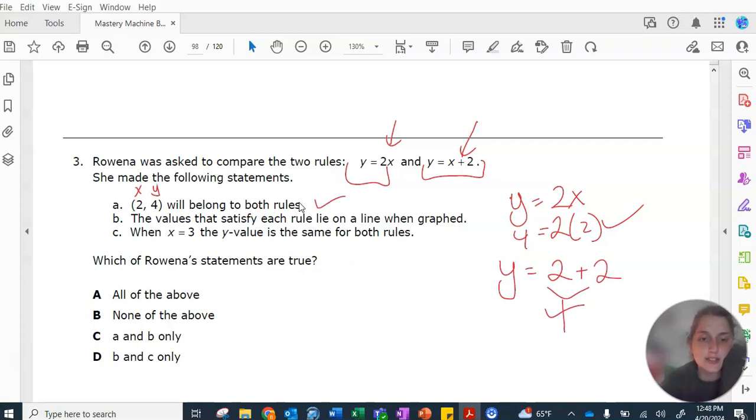The values that satisfy each rule lie on a line when graphed. If I were to graph the equation y equals 2x, it would look like that, and everything would be on a line. If I was to graph the equation y equals x plus 2, it would look like that, and every dot would be on a line.